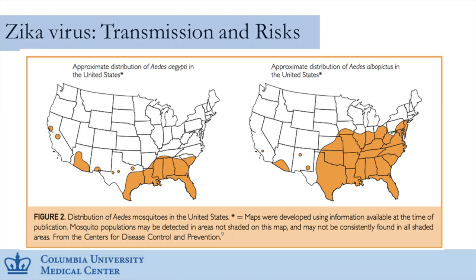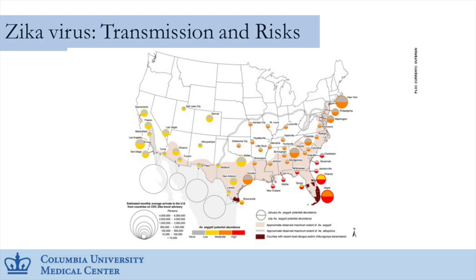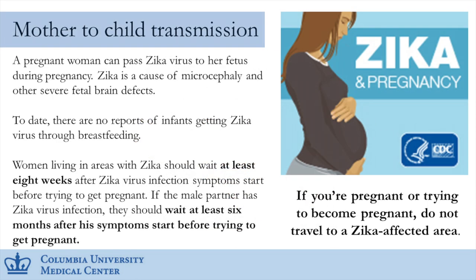The mosquito type most strongly associated with transmission is shown on the left map and is more limited in range, while the other type still transmits the virus and has a broader distribution. Another map shows the hot spots where Zika will hit the hardest in the United States, based on what we know about the mosquitoes.